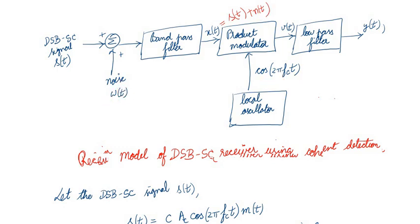The filtered noise omega(t) becomes n(t). This is then multiplied with cosine — it is a product modulator — and the output v(t) is x(t) multiplied with cos(ωct). It is then passed through a low pass filter and we get the output, which we expect to be the message signal along with the noise.